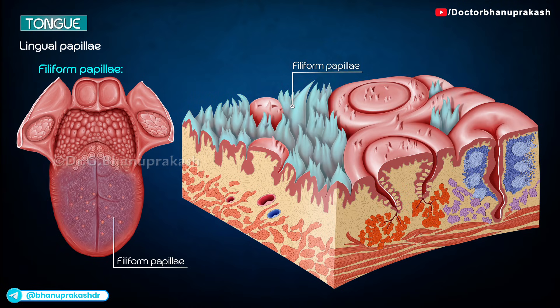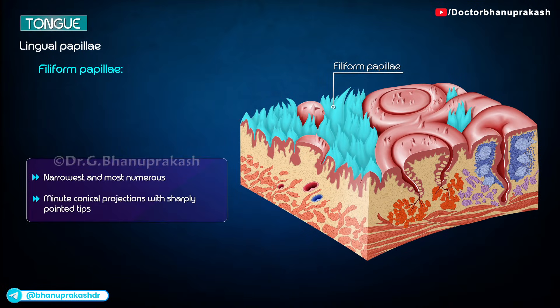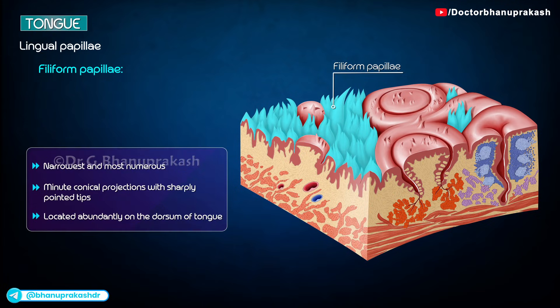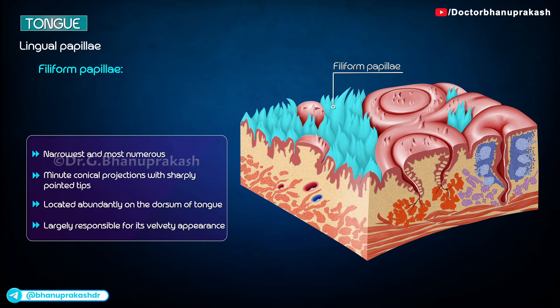Filiform papillae are the narrowest of the papillae and most numerous. These are small conical projections with sharp pointed tips. Filiform papillae are situated abundantly on the dorsum of the tongue and are responsible for its velvety appearance.